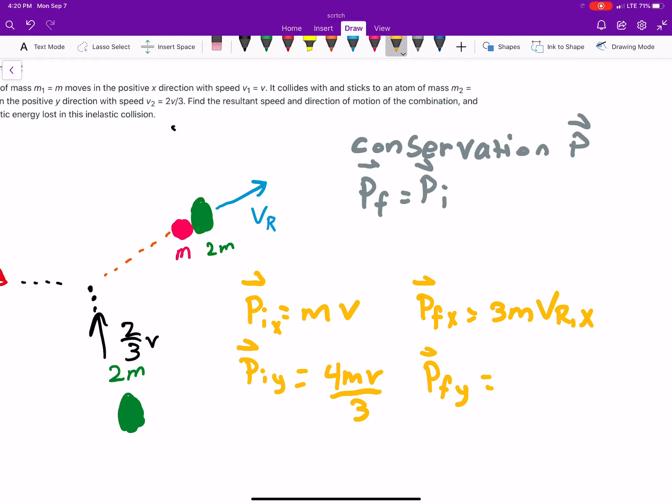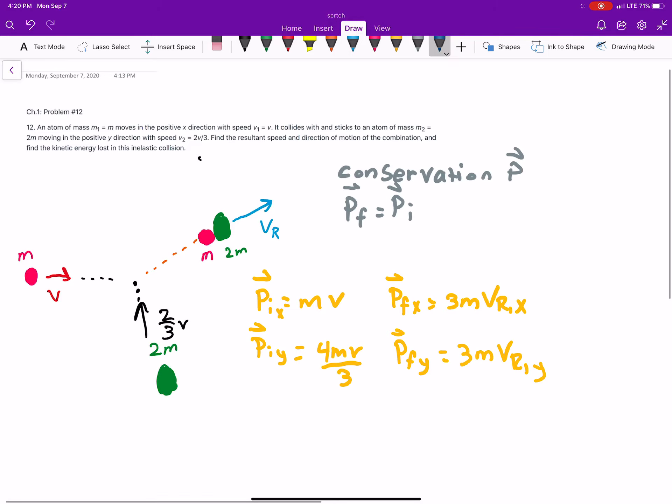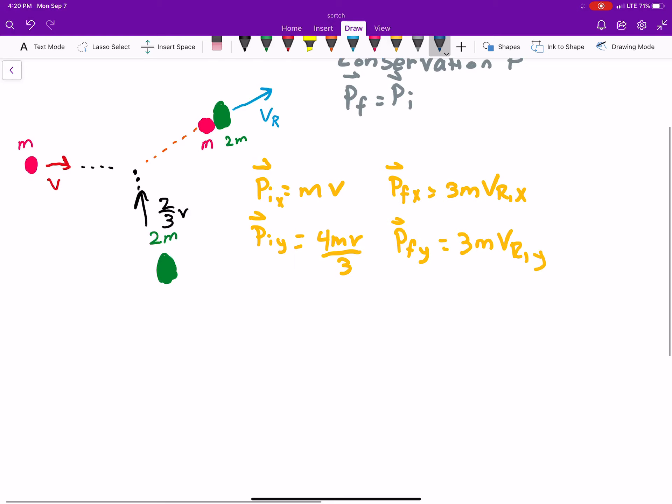And we can do the same thing with the final y momentum. Again, they're combining, so that's going to be 3m, times the velocity resultant in the y direction. And my cat is laying on me, so if my thing moves, that's why. So, we have that down.